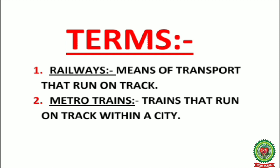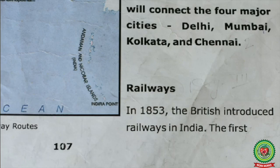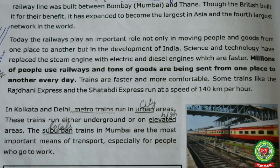Before beginning the reading of railways, let's look at the terms. First, railways means a mode of transport that runs on a track. Second, metro trains are trains that run on a track within a city. Now look at the book on page number 107. In 1853, the British introduced railways in India. The first railway line was built between Bombay and Thane. Though the British built it for their own benefit, it has expanded to become the largest in Asia and the fourth largest network in the world.